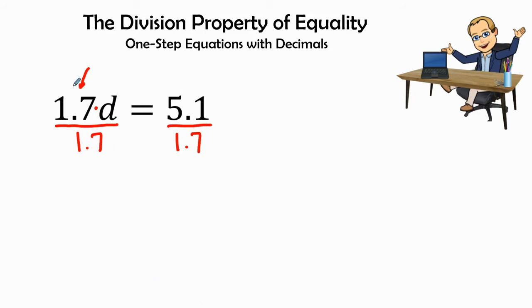Once I have divided 1.7 by 1.7, this is going to cancel each other out, leaving me with my variable all by itself.